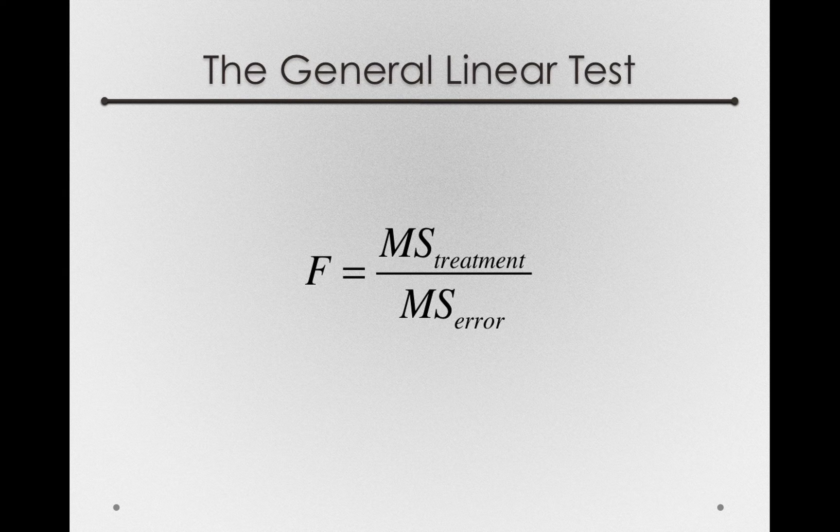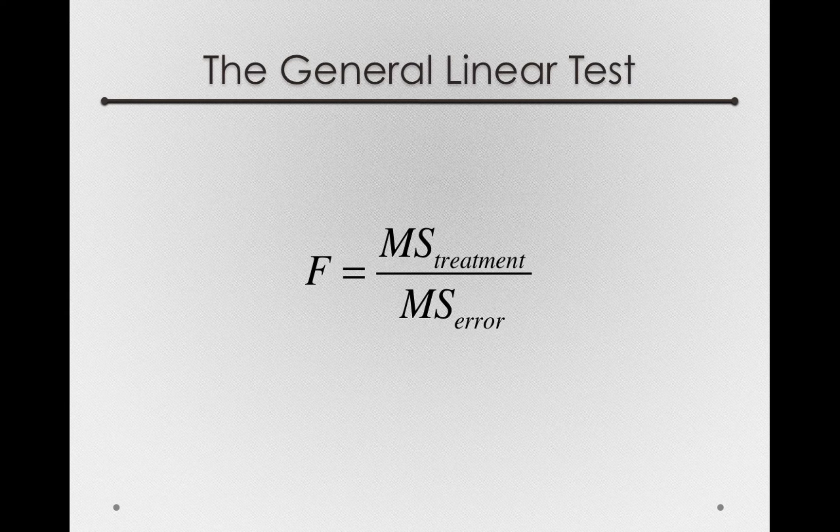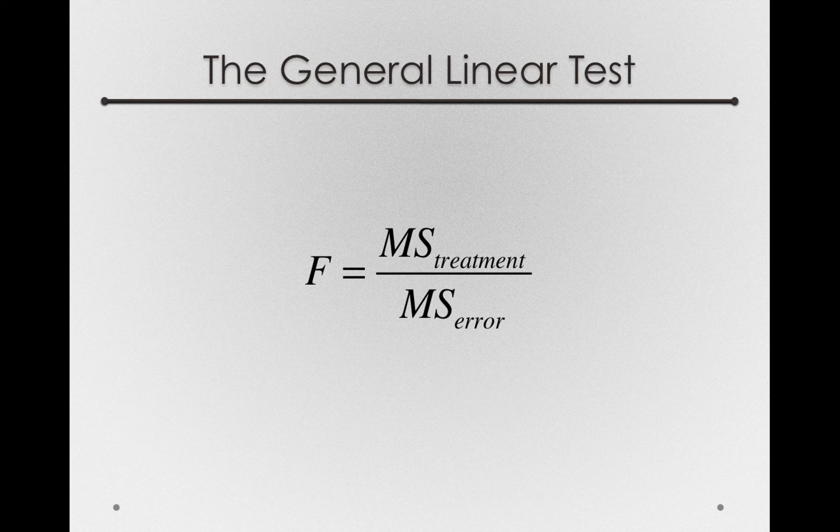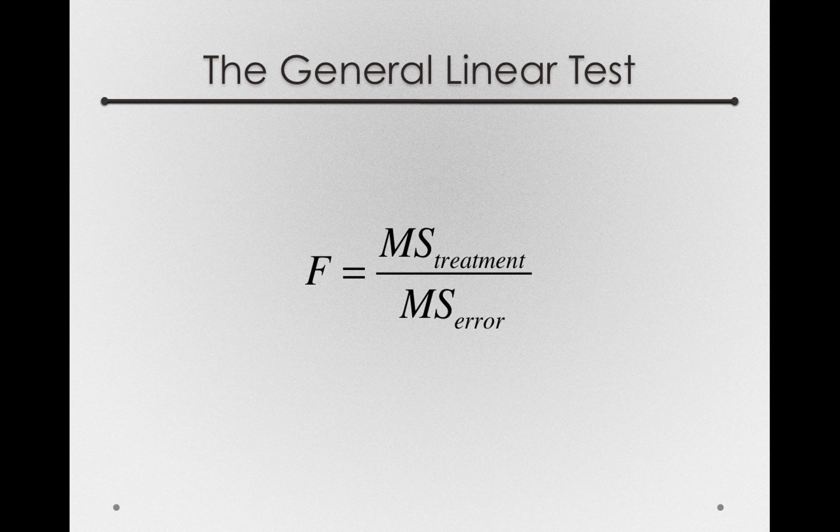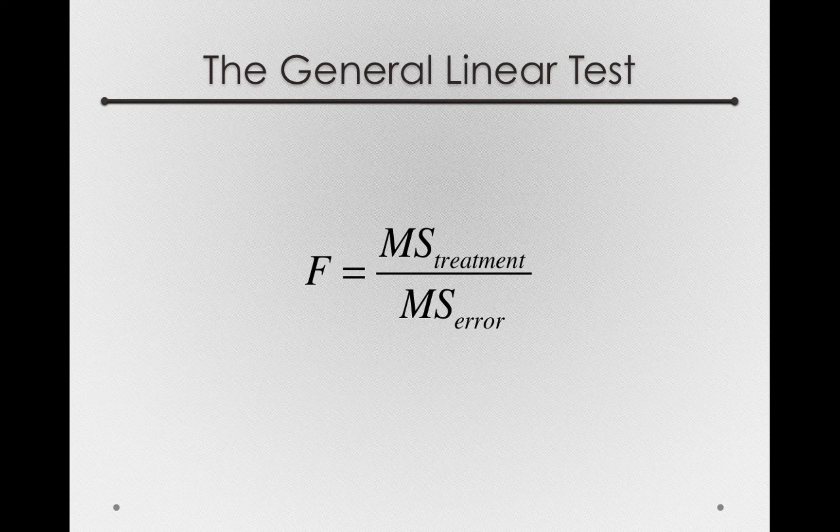So our general linear test, even though we came to this formula in a slightly different way, in a way that we were couching our test in terms of reduction in error, we still end up with an F statistic that's formed on the mean square, the variance of treatments divided by a mean square for error.